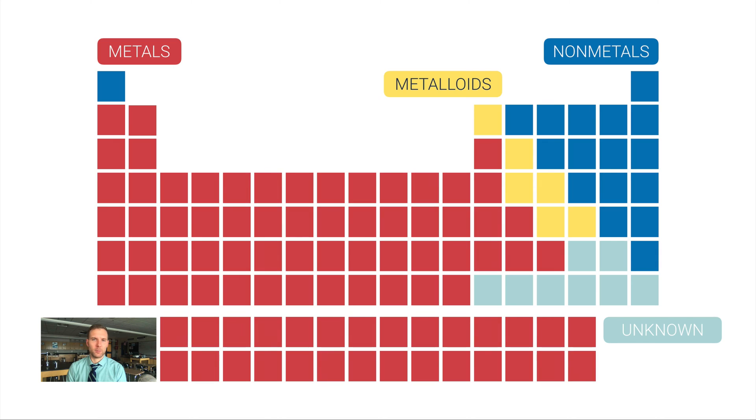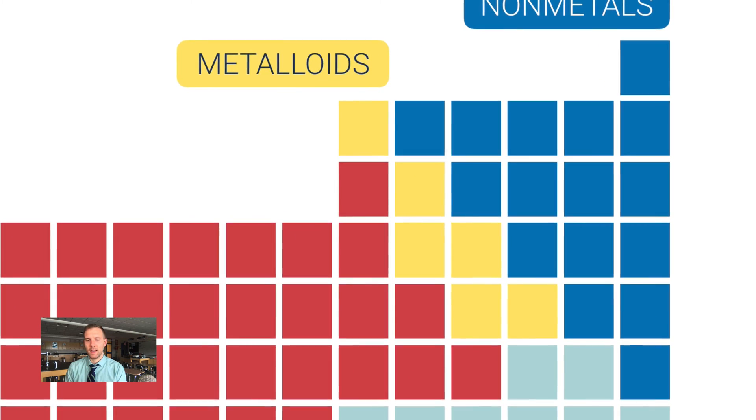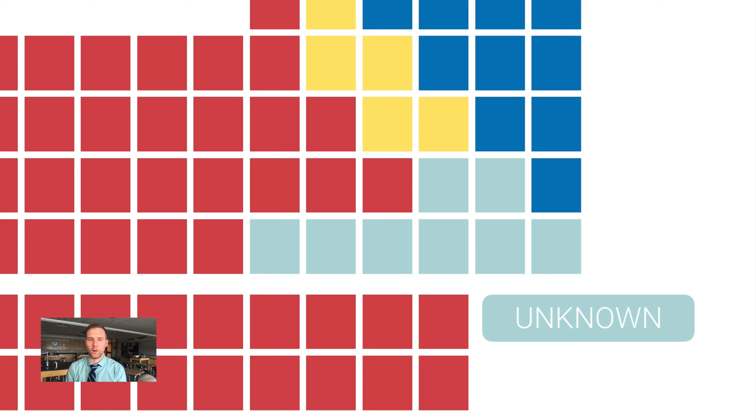Most of the periodic table is what we call metals. A lot of the periodic table is what we call non-metals. Then we have this little sliver staircase of metalloids, and finally this corner down here of really unknown elements. They're so unstable that they break down before we have a chance to figure out what kind of element they behave like.